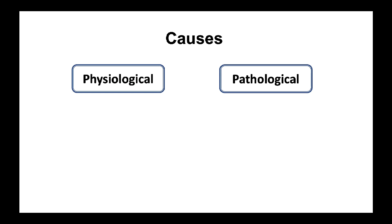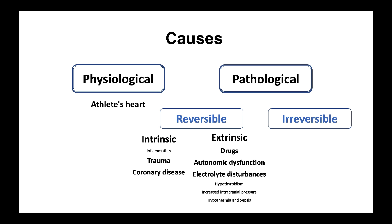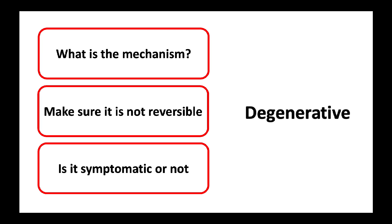The causes for bradyarrhythmia can be generally classified as physiological or pathological. The most common physiological cause is bradycardia of athletes. Pathological causes can be classified into reversible or irreversible. Most common reversible causes include intrinsic causes such as trauma or ischemia, and extrinsic causes such as drugs, autonomic dysfunction, and electrolyte imbalance. The most common irreversible causes include age-related degenerative conduction disease or infiltrative diseases. When approaching bradyarrhythmia, a clinician should ask: what is the mechanism, is it due to a reversible cause, and is it symptomatic?